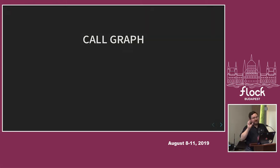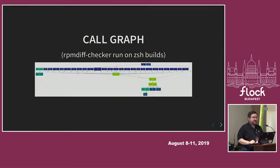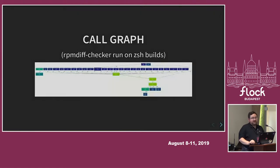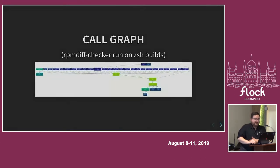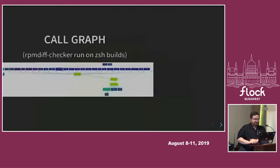Here's the call graph. When the C RPM Diff checker program runs, this is what the call graph looks like. The entry points are at the top, the second row corresponds to one or more of those tests, and each box spawns multiple external scripts — Perl, Python, sometimes shell. This is just running it on two Z shell builds. I captured this because I thought it was interesting.